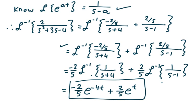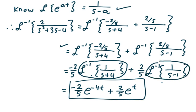Now I'm done. Looking at the first piece, a is negative 4, and in the second piece, a is 1. Using the formula — the Laplace transform of e to the at is 1 over s minus a — we work backwards. So the final answer is negative 2 fifths e to the negative 4t plus 2 fifths e to the t.